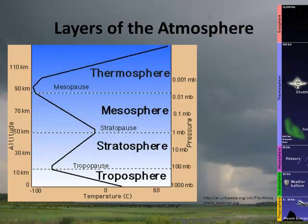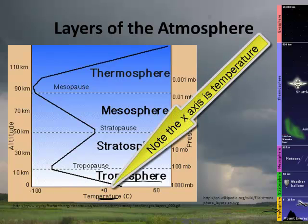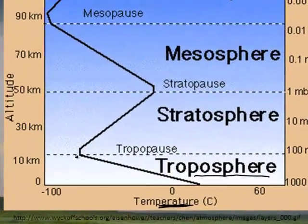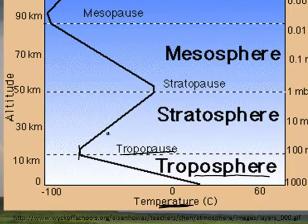Before we can truly understand thunderstorms, we do need to understand a little bit about the atmosphere. The atmosphere has several layers. The first layer is called the troposphere — the lowest level. As you get higher, the temperature gets lower. As you get to a certain point about 10 kilometers above the earth, the temperature flattens out, and this is called the tropopause.